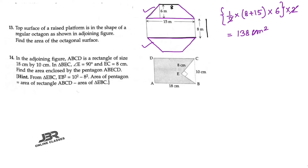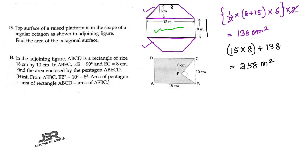The middle portion is a rectangle with area = 15 × 8 = 120 meter square. Adding both trapeziums: 120 + 138 = 258 meter square. That is your final answer.